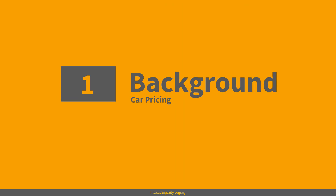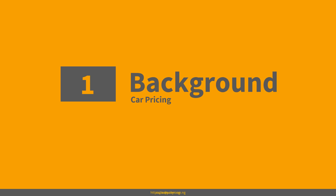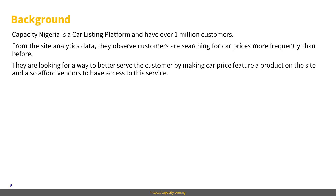Let's go to the background of this use case, which is car pricing. Capacity Nigeria is a fictitious company — it's a car listing platform with over 1 million customers. From the site analytics data, they observed that customers do search, and what they're searching is not just to buy a car — they search for different price ranges, they filter by prices, which shows they're trying to understand how much their car is worth.